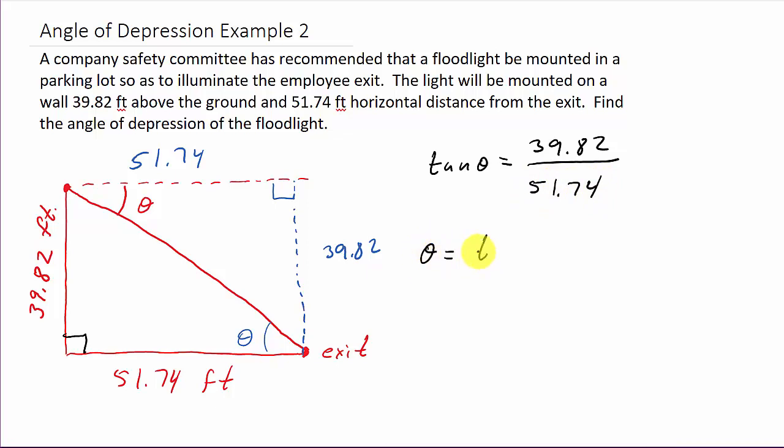And so, theta, that would be the inverse tangent of 39.82 over 51.74. And so, theta, I'll punch this into my calculator. Make sure your calculator is in degrees. That's inverse tangent 39.82 divided by 51.74.